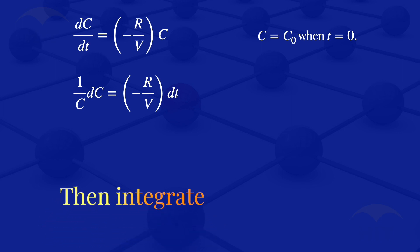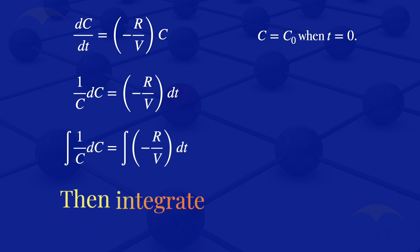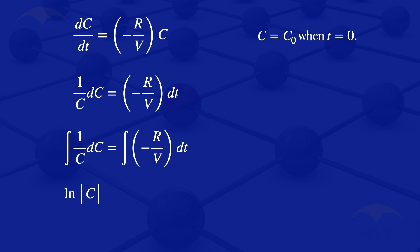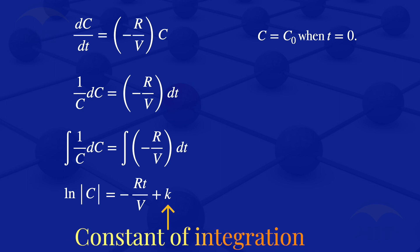We then integrate both sides. The integral of 1 over C with respect to C gives us ln of the absolute value of C. Integrating the right-hand side with respect to T gives us minus RT divided by V plus K, where K is a constant of integration.